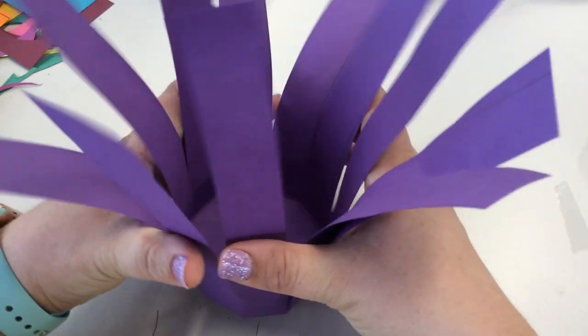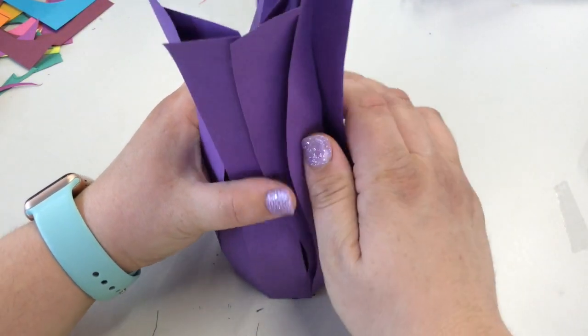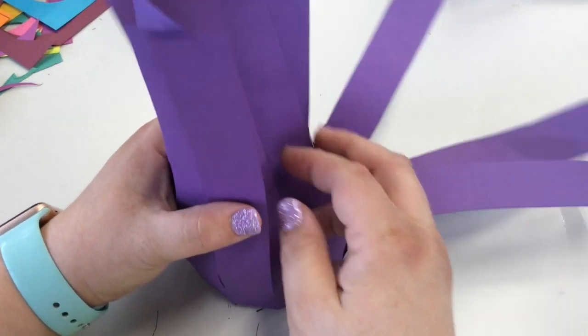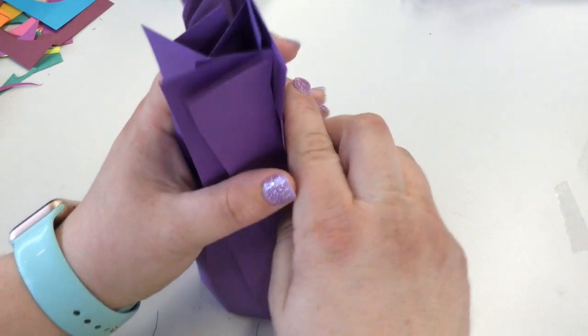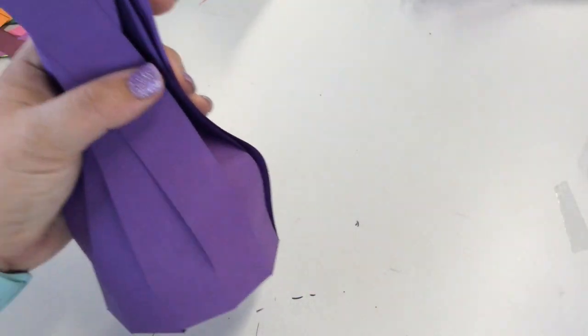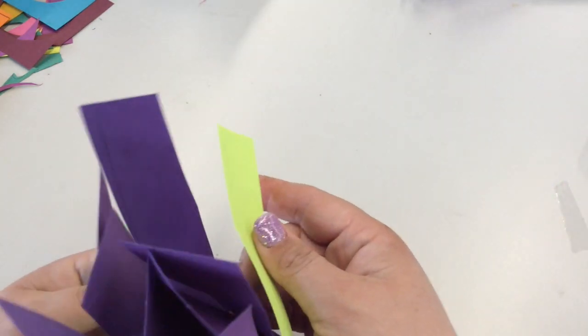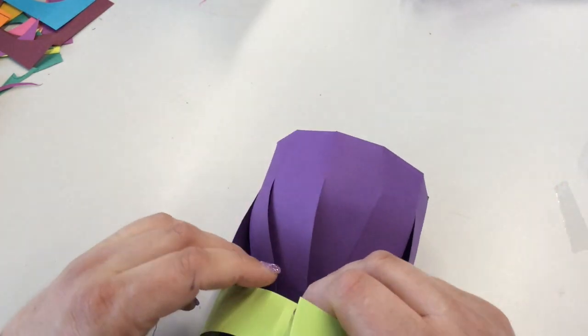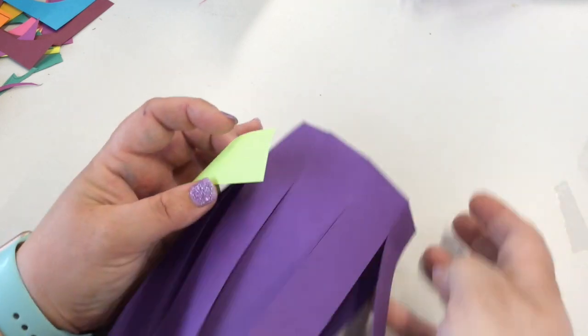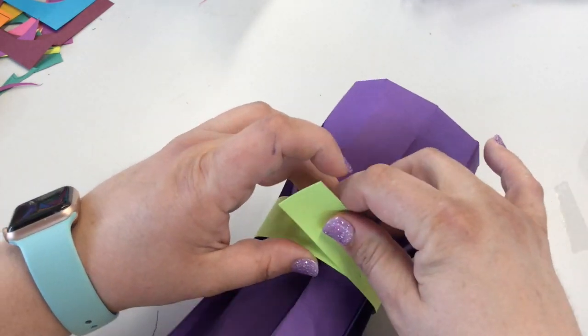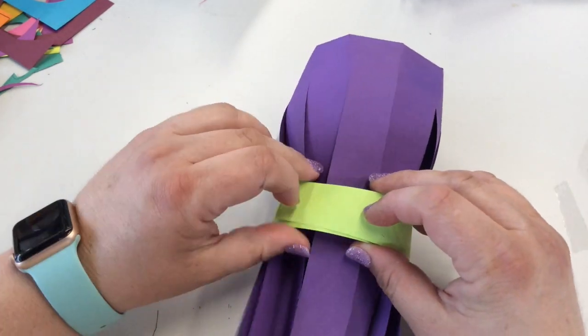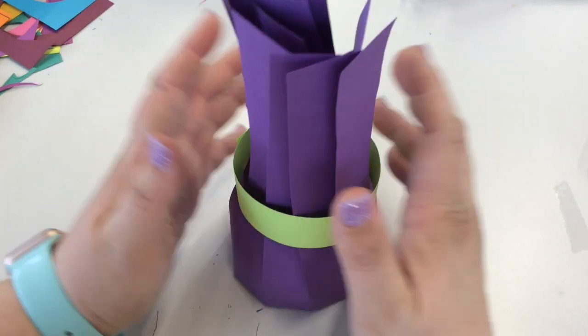Then take your vase, all those long pieces, and bunch them up gently. Make sure you're not getting any creases or crinkles in them. Hold it with one hand, and then take your strip, wrap it around, and then push and hold so that strip stays in place. It's going to look a little willy-nilly at first, but we'll beautify it here in a second.